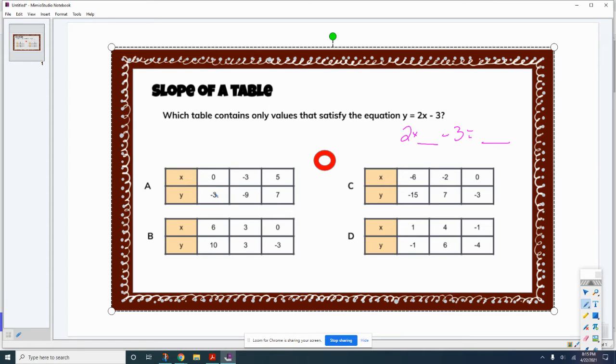So if I do 2 times 0, which is 0, and 0 minus 3 is negative 3, and it works.